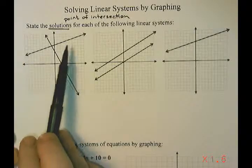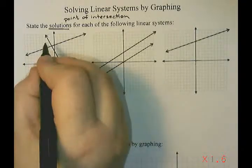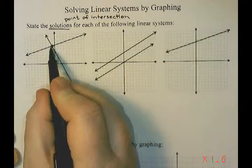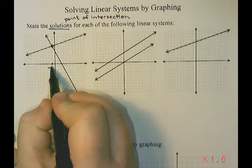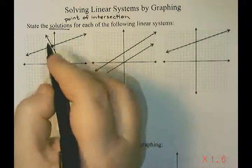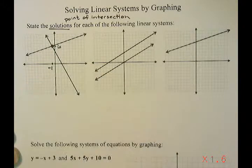So if we take a look at our first pair of lines, they intersect at this point right here. And this point is at negative 1 on the x-axis and 1, 2, 3, 4, 5, 6 on the y-axis.